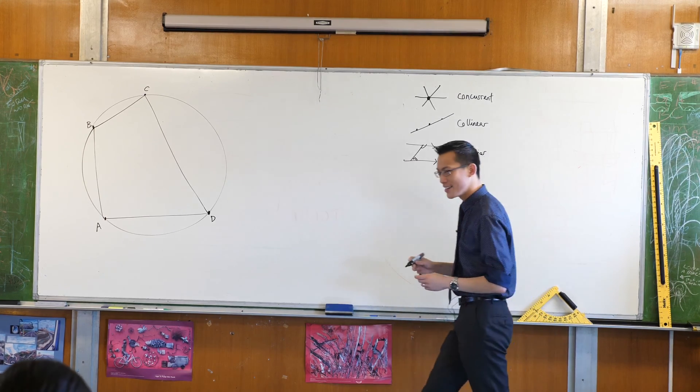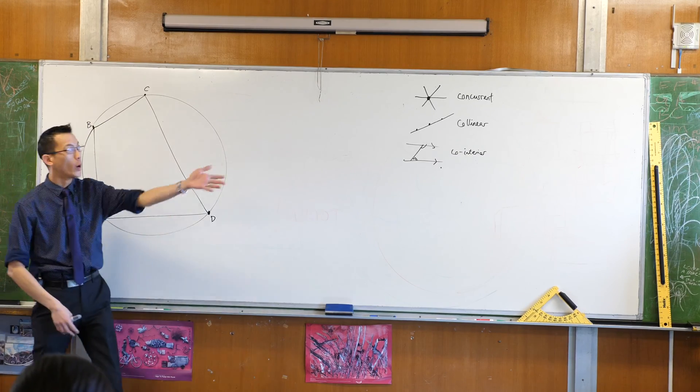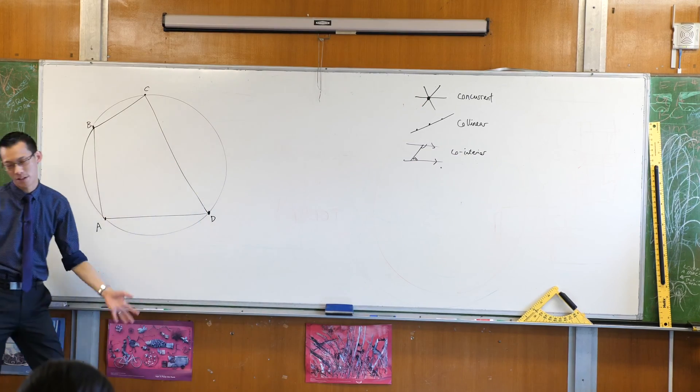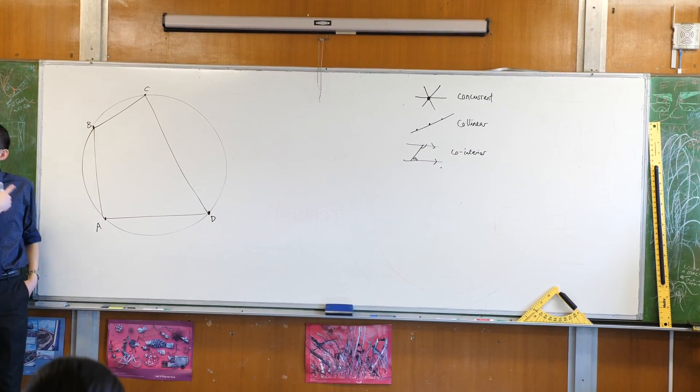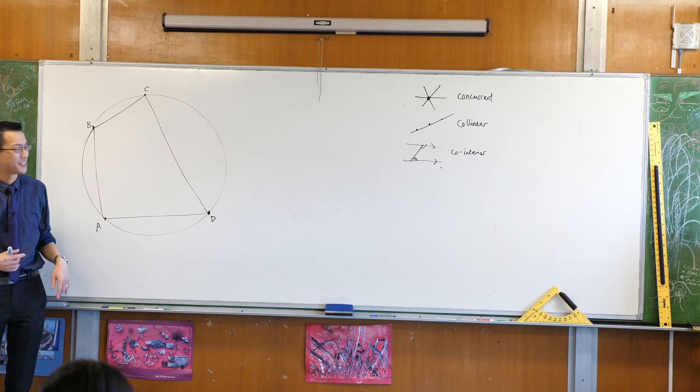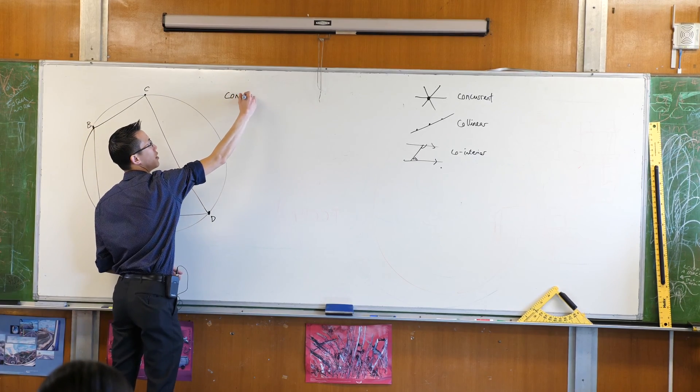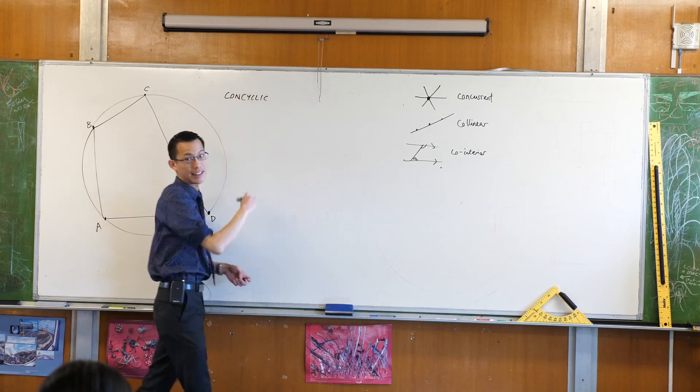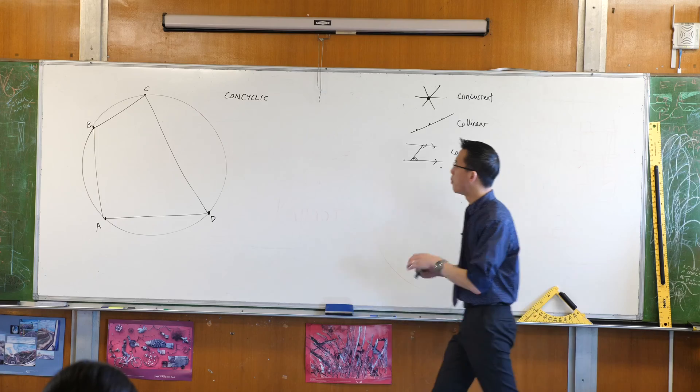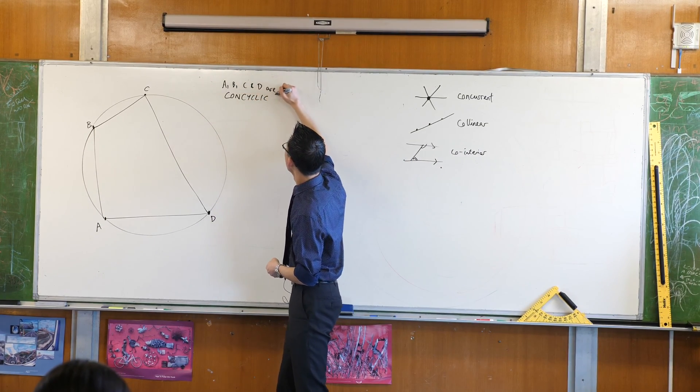So you're starting to get the theme here, whenever you have objects that are together in some way, united in some way, we always prefix it with this co- prefix, just like cooperate or something like that. So because these are all together on a circle, because they are together on a circle, we call these guys con-cyclic, okay? Con-cyclic. Together on a circle. The points A, B, C, and D are con-cyclic.